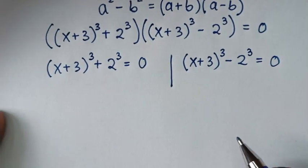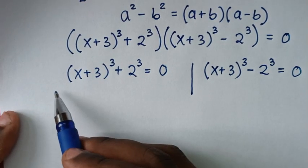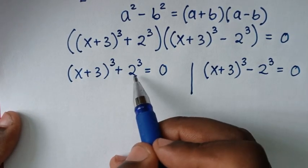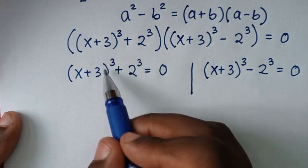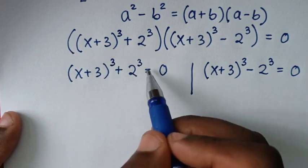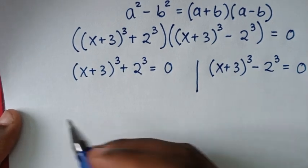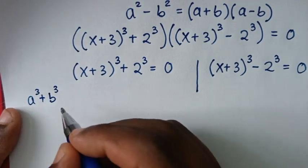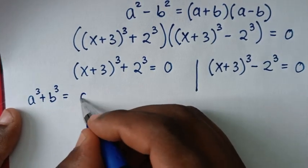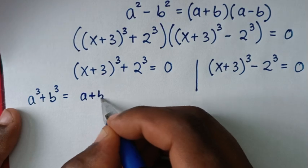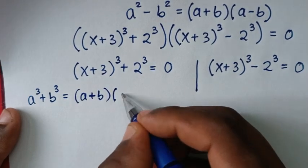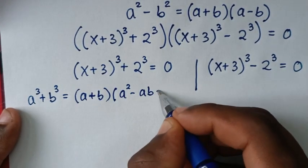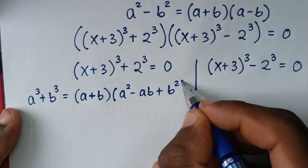For this first solution, (x + 3)^3 + 2^3, this is in the form of a³ + b³, which equals (a + b)(a² − ab + b²).